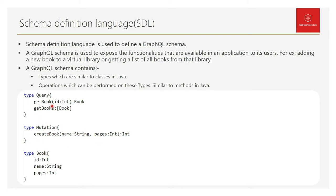So we have two queries here. One is GetBook, which takes an argument ID of type int and returns a book. The second is GetBooks, which takes nothing but returns a list of books. Similarly, we have a mutation called CreateBook that takes two arguments, name of type string and pages of type int, and it returns an integer. These operations are exposed to the users with the help of the GraphQL schema.